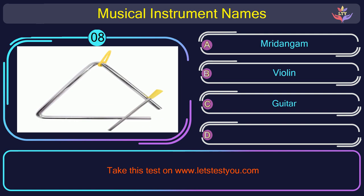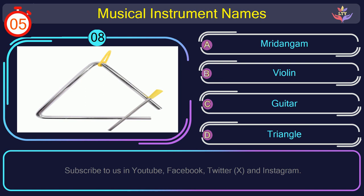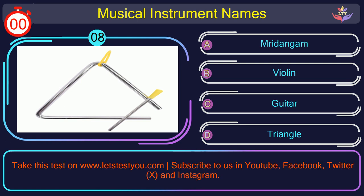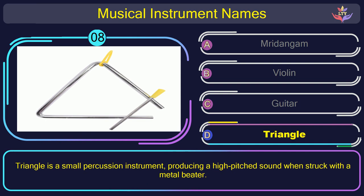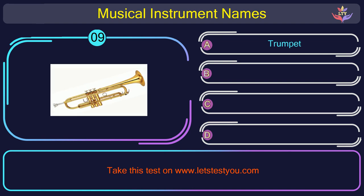Question number 8. Guess the name of the musical instrument in this picture. The correct answer is option D: Triangle. Triangle is a small percussion instrument producing a high-pitched sound when struck with a metal beater.